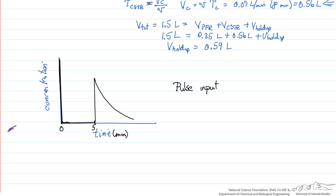So this is the exit age distribution, or is often called the residence time distribution, for this non-ideal CSTR that has holdup, bypass, and a plug flow reactor section in series with the well-mixed section.